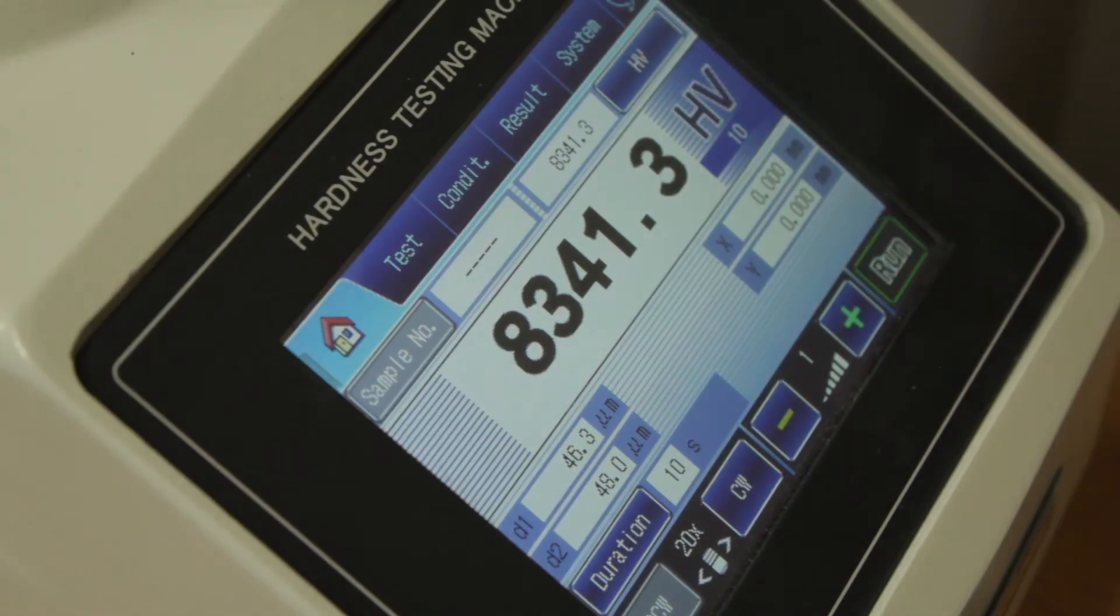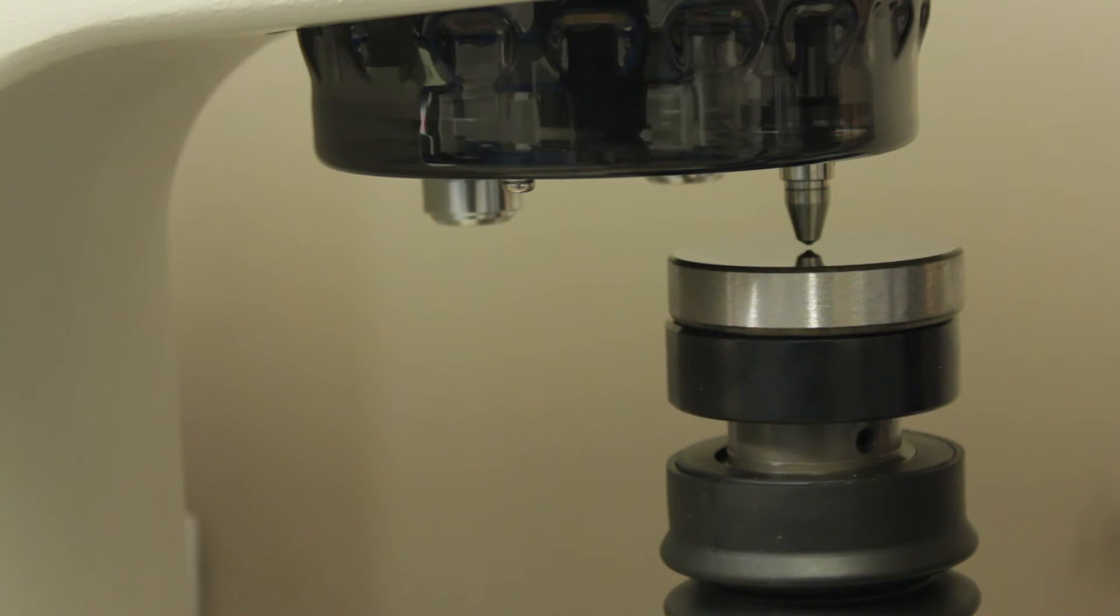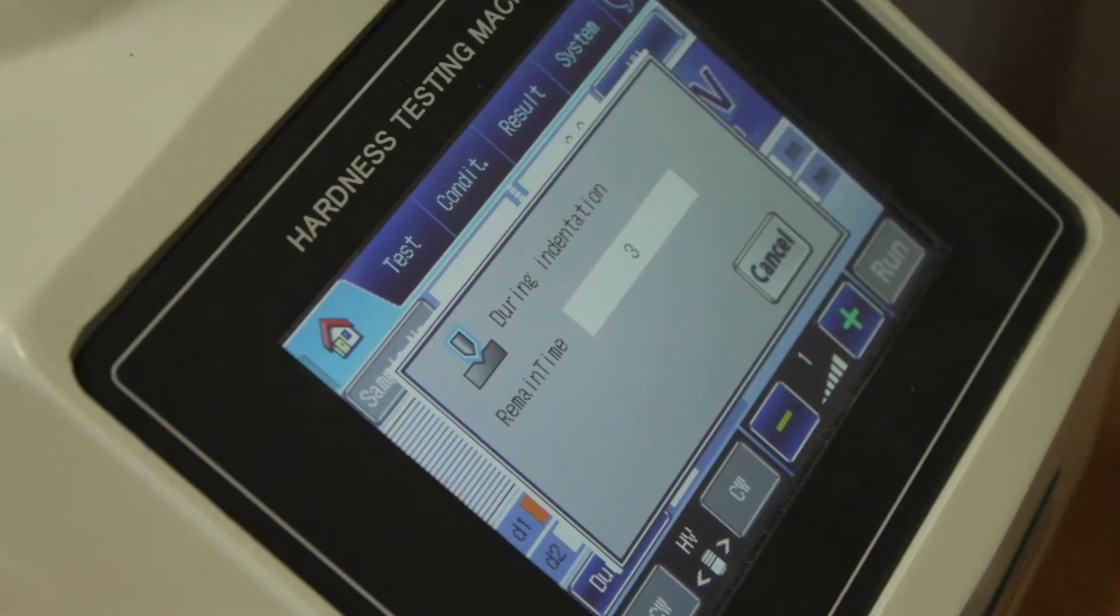Next, hit the run button. This test is shown on a separate calibration sample. The diamond probe will engage with the test piece and there will be an indentation dwell time as set in the control.